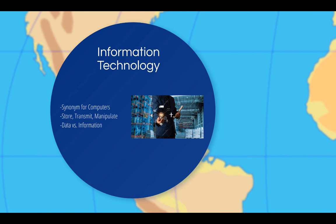The term information technology, or IT, is commonly used as a synonym for computers and computer networks. Computers use IT to store, transmit, and manipulate information. An information technology system, or IT system, is generally an information system, a communication system, or more specifically speaking, a computer system, including all the hardware, software, and equipment, operated by a limited group of users.